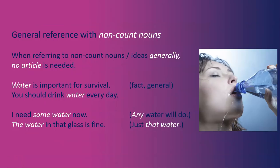General reference with non-count nouns: when referring to non-count nouns or ideas generally, no article is needed. For example, 'Water is important for survival' — this is a fact or general information. 'We should drink water every day' — also a fact or general information. Now look at the difference: 'I need some water now' — I want something now, any water will do, but right now. 'The water in that glass is fine' — we're talking about specific water. One is general and one is about a specific here-and-now situation.